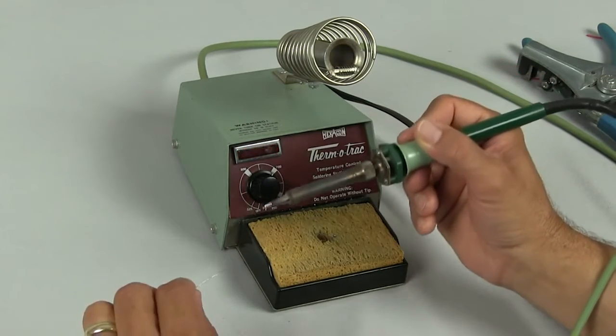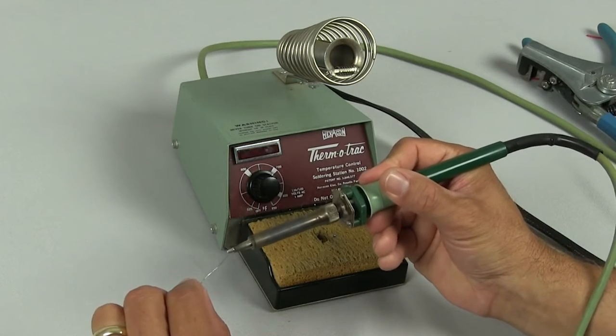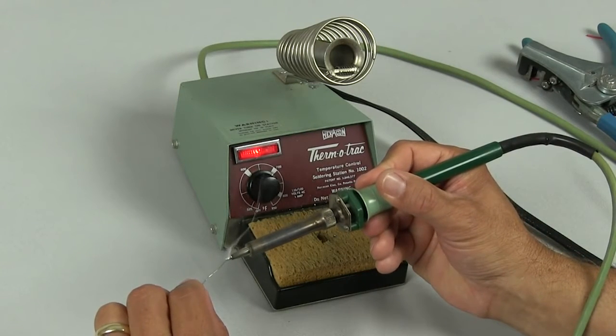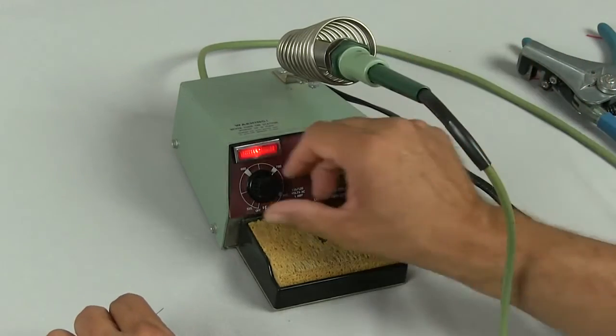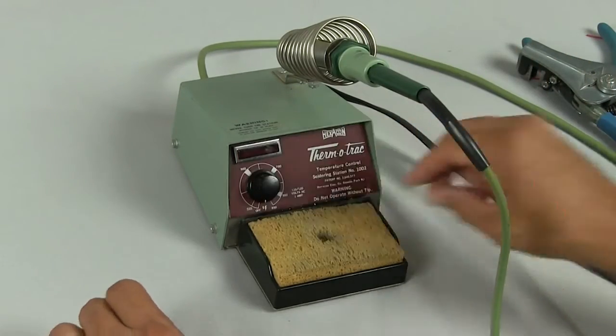To protect your tip when you are finished soldering, what you do is apply a bead of solder from your solder wire, put it back in your holder and then turn off your solder iron.